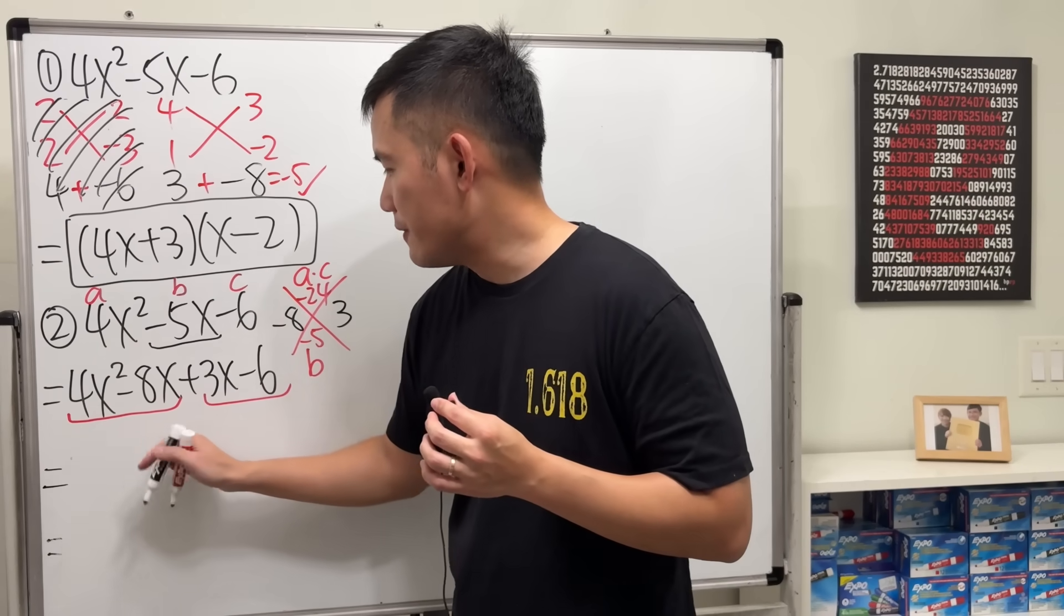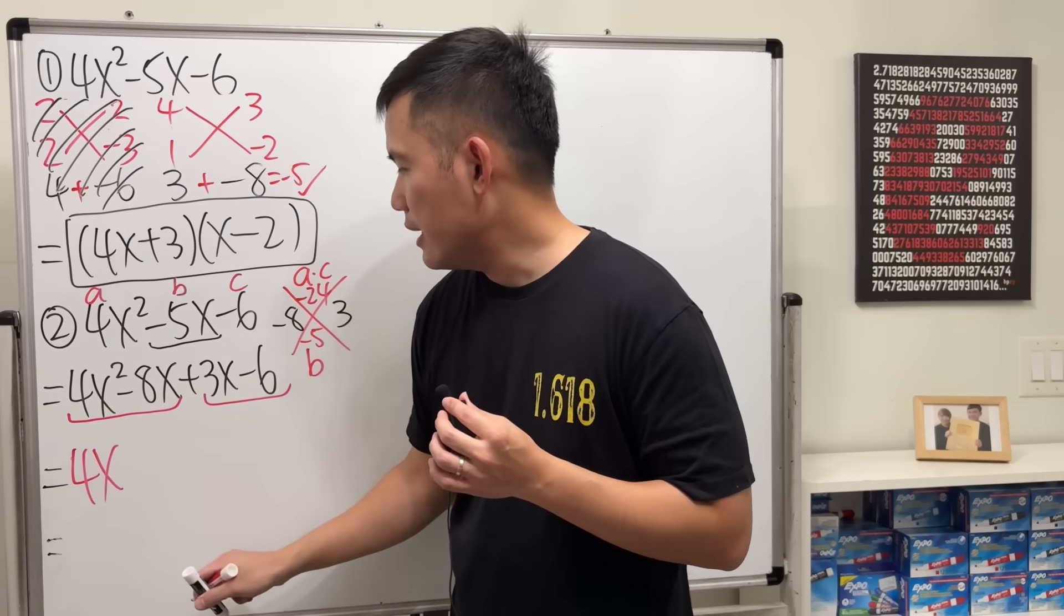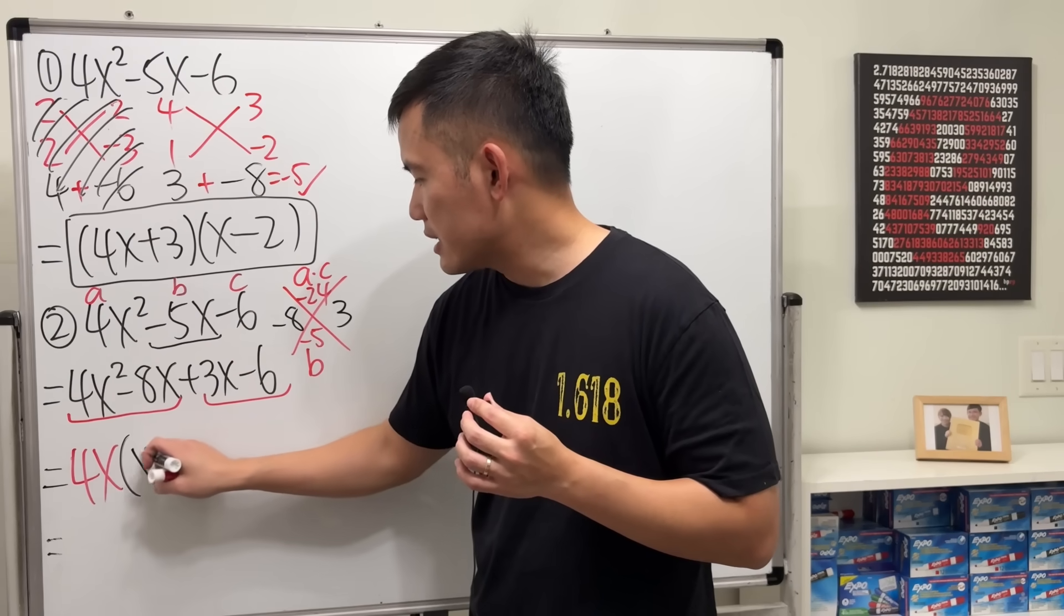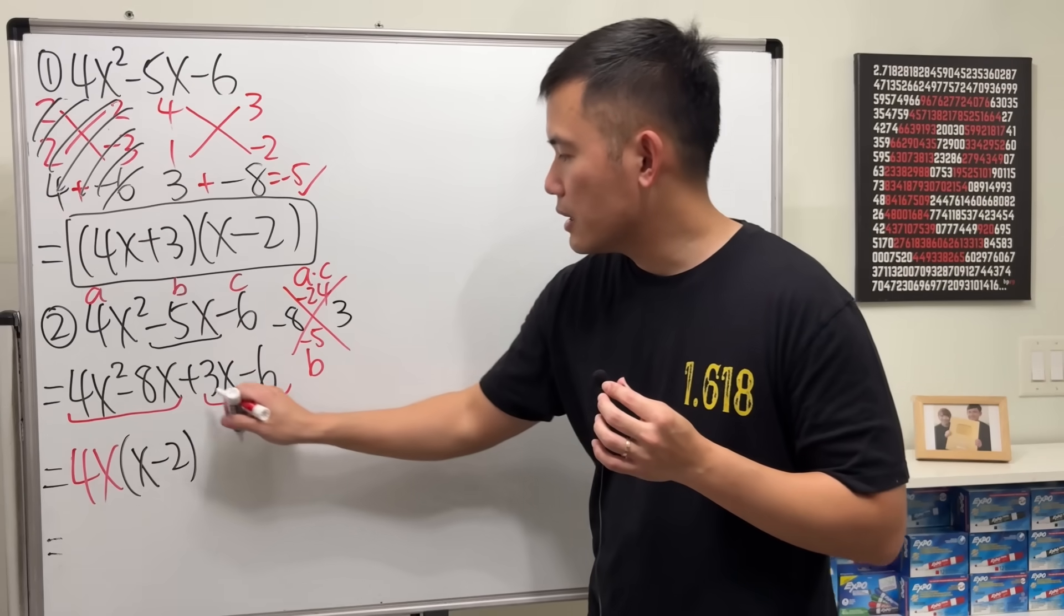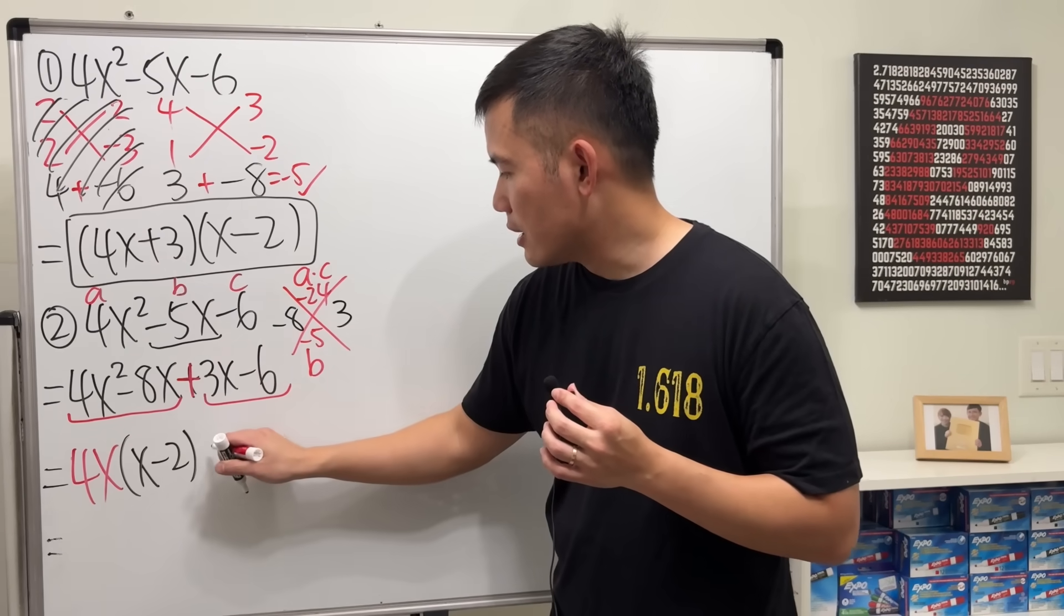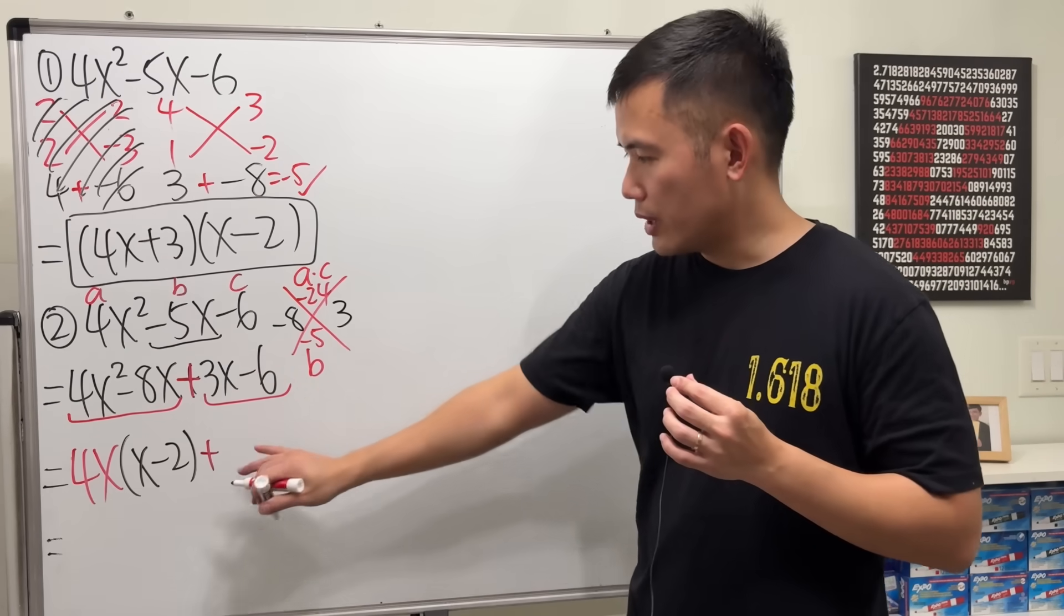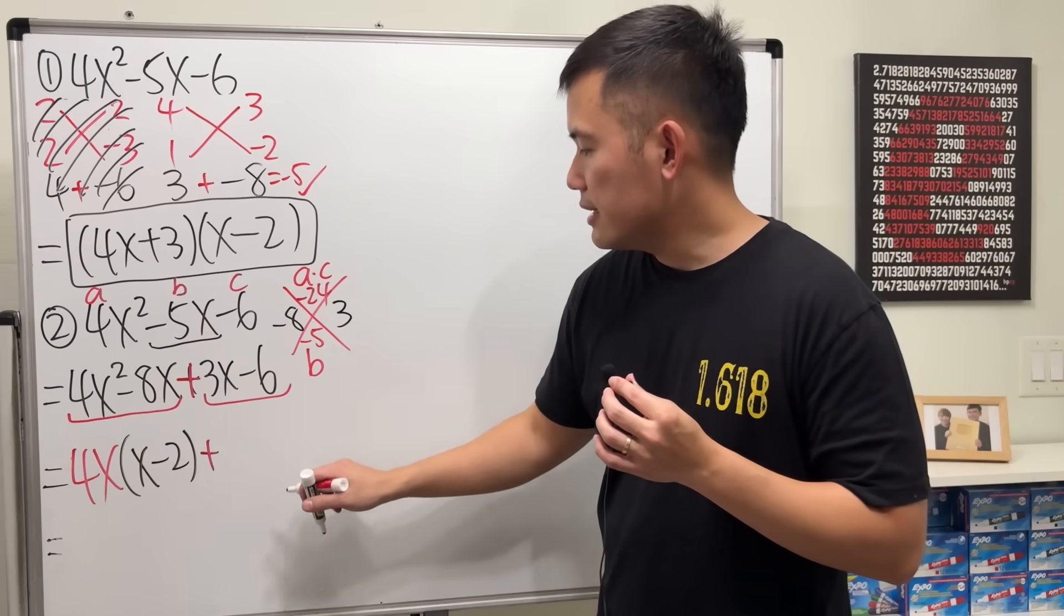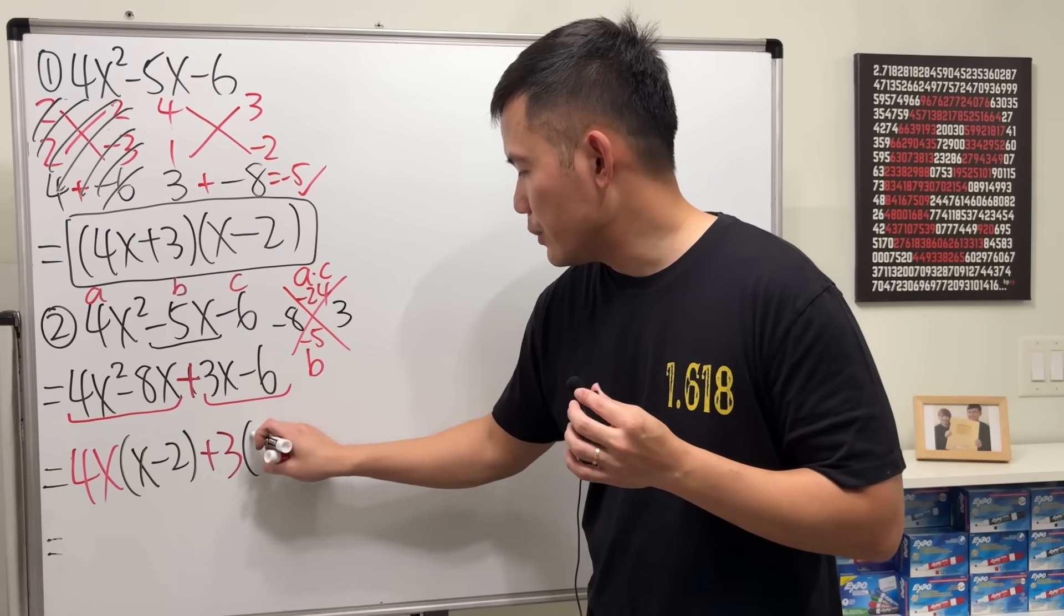From the first two terms, we can factor out 4x. And then we get x minus 2 left. And then from the last two terms. First, make sure we write down the sign in the middle right away. 3 and negative 6. We can factor out 3. And then we get x minus 2.